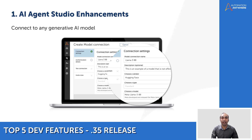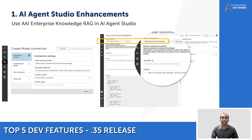Here's the best part: you can now use Automation Anywhere's Enterprise knowledge — our RAG solution — in AI Agent Studio. This lets you build AI skills grounded in your data, enabling you to automate complex scenarios while maintaining the governance you need through our Enterprise knowledge. Customers can improve the accuracy of their AI skills models while reducing hallucination from model responses by uploading relevant enterprise data such as PDFs, CSVs, and other file formats when integrating with models from different vendors.